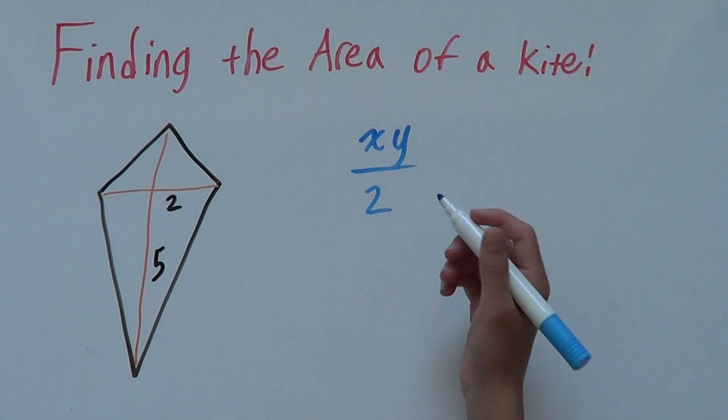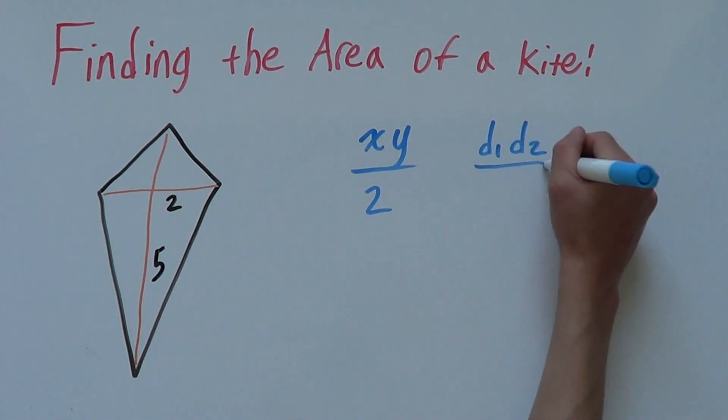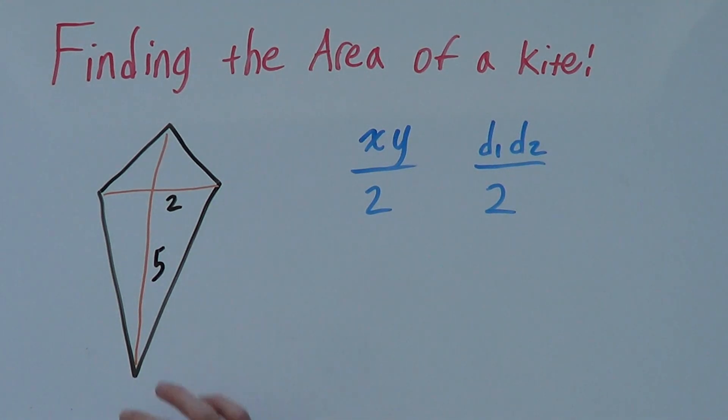You can also write this formula—a lot of people write it d1, d2 over 2, where the d's represent the diagonals.